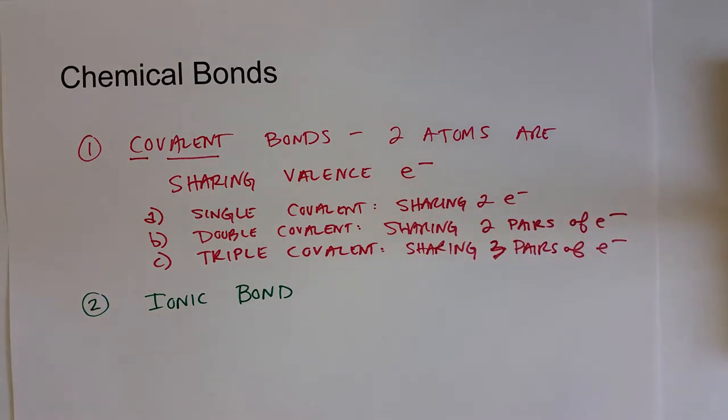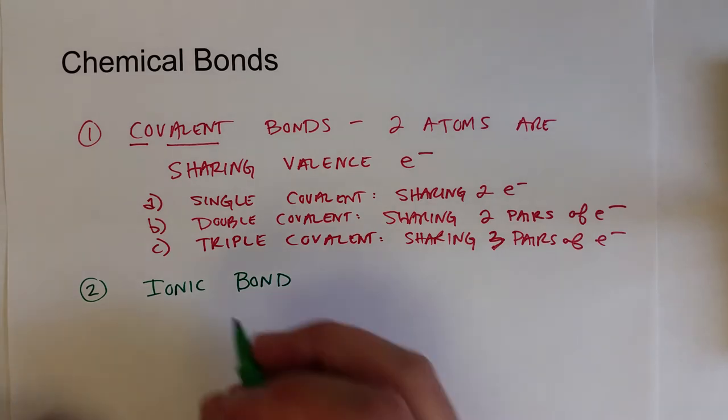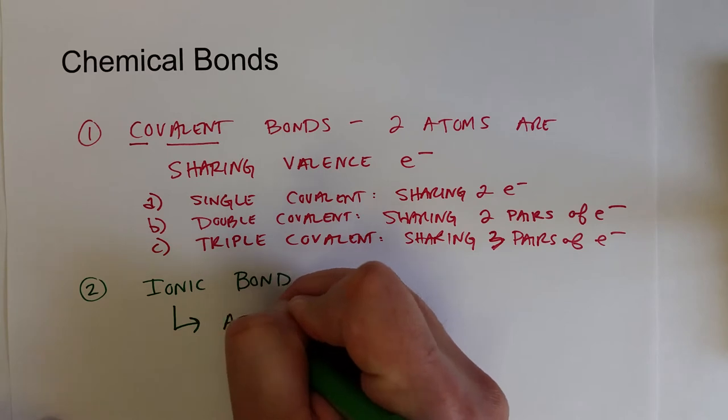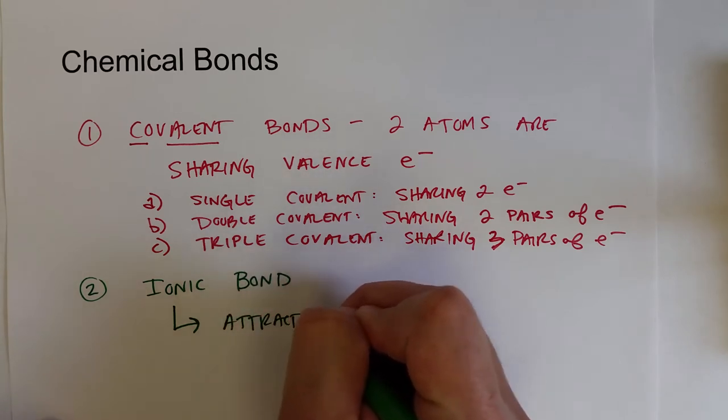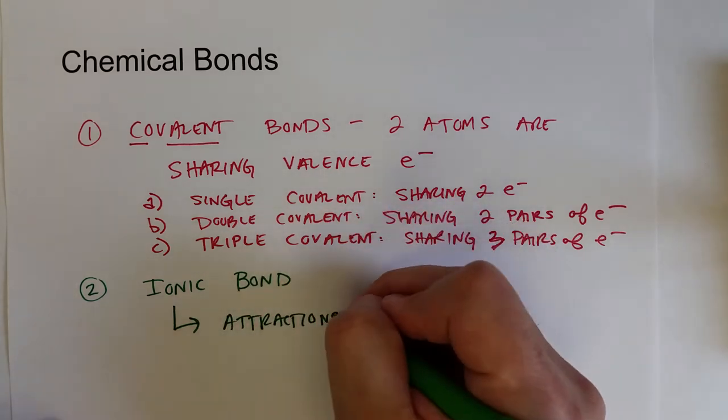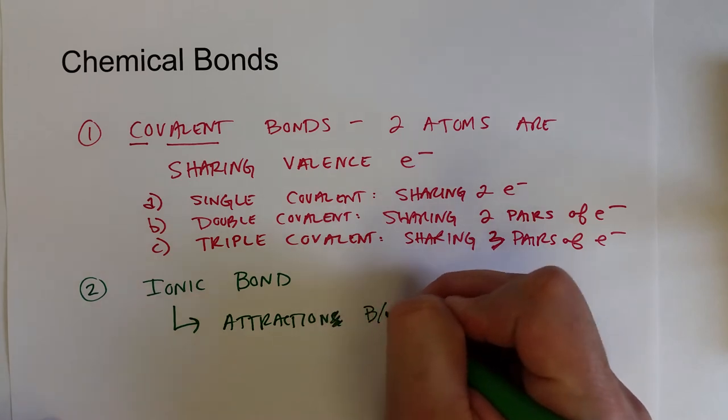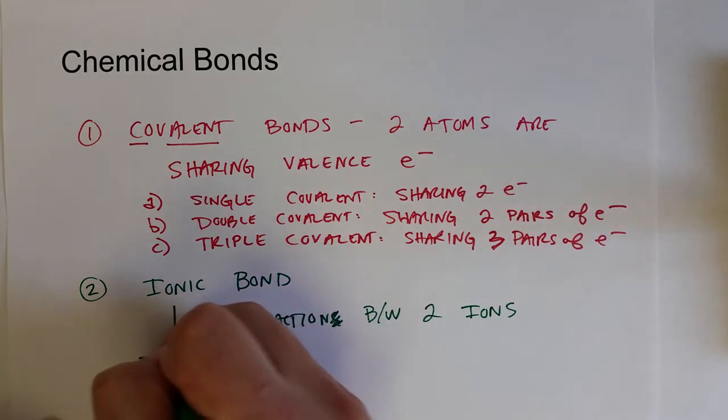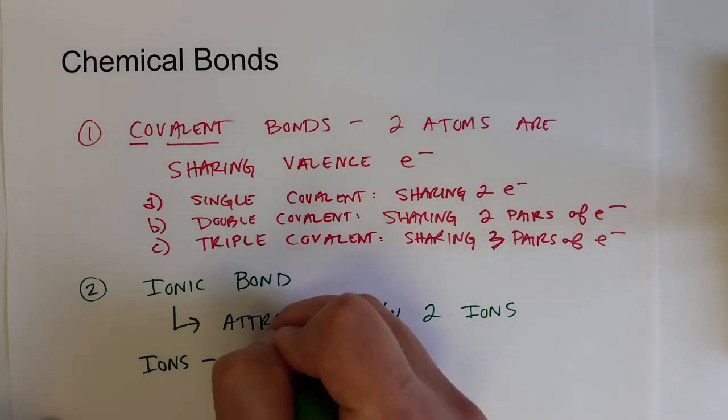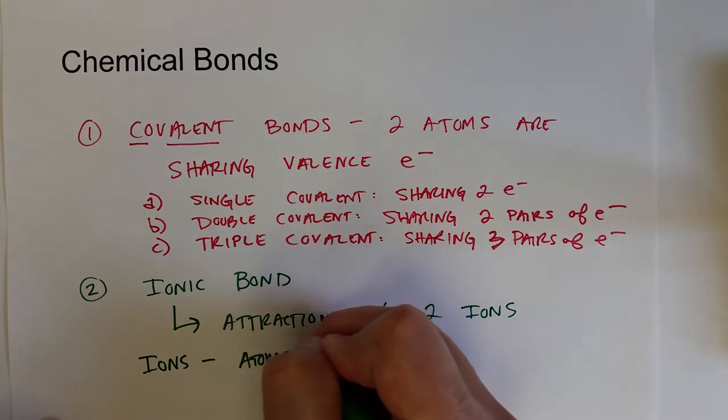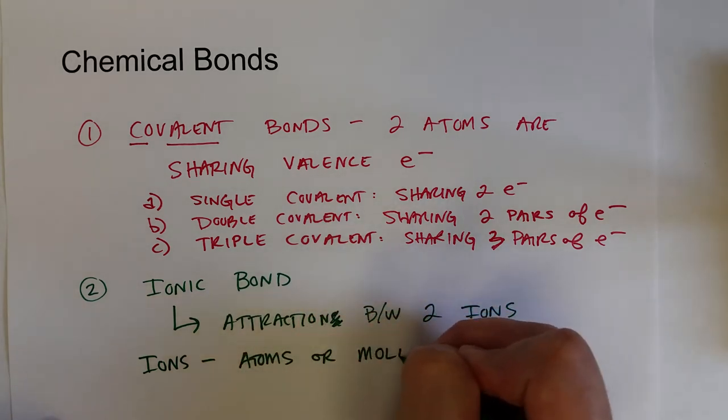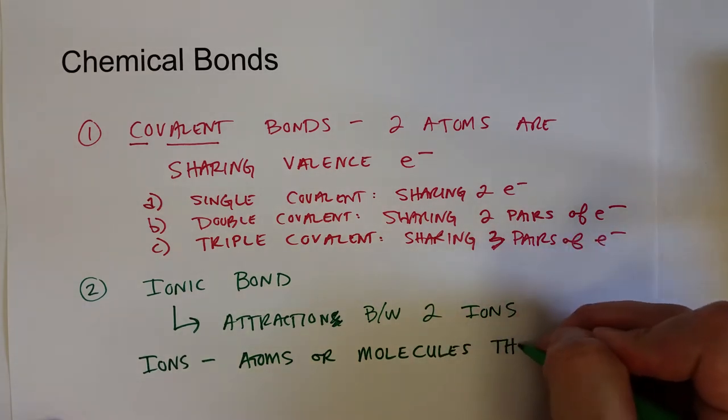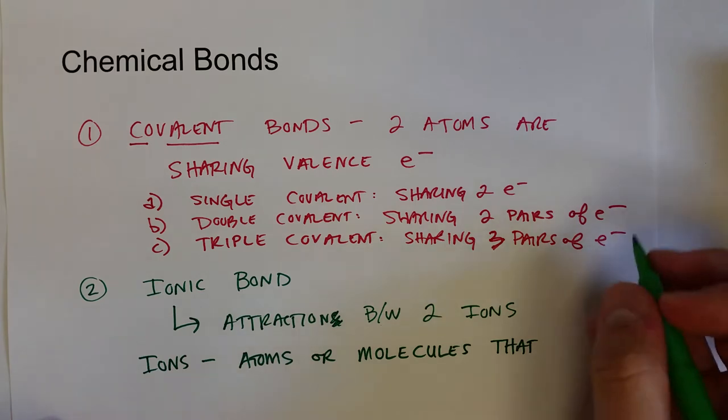Now in contrast, the ionic bond is the attraction between two ions. Ions are atoms or molecules that have a net positive or negative charge.